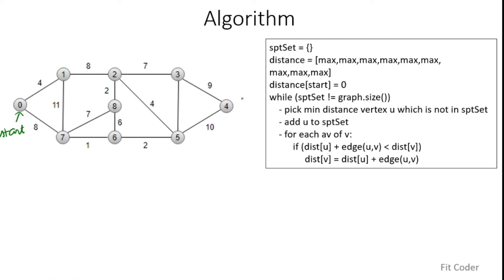Now let's see what the algorithm says. We have a loop: while SPT set is not equal to graph size. The SPT set is initially empty, so we iterate this loop until the SPT set contains all 9 elements of the graph. In each iteration, we pick the minimum distance vertex from the distance array which is not in the SPT set — an unexplored node with minimum distance. We add that node to the SPT set, and for each adjacent vertex of that node, we compute a distance.